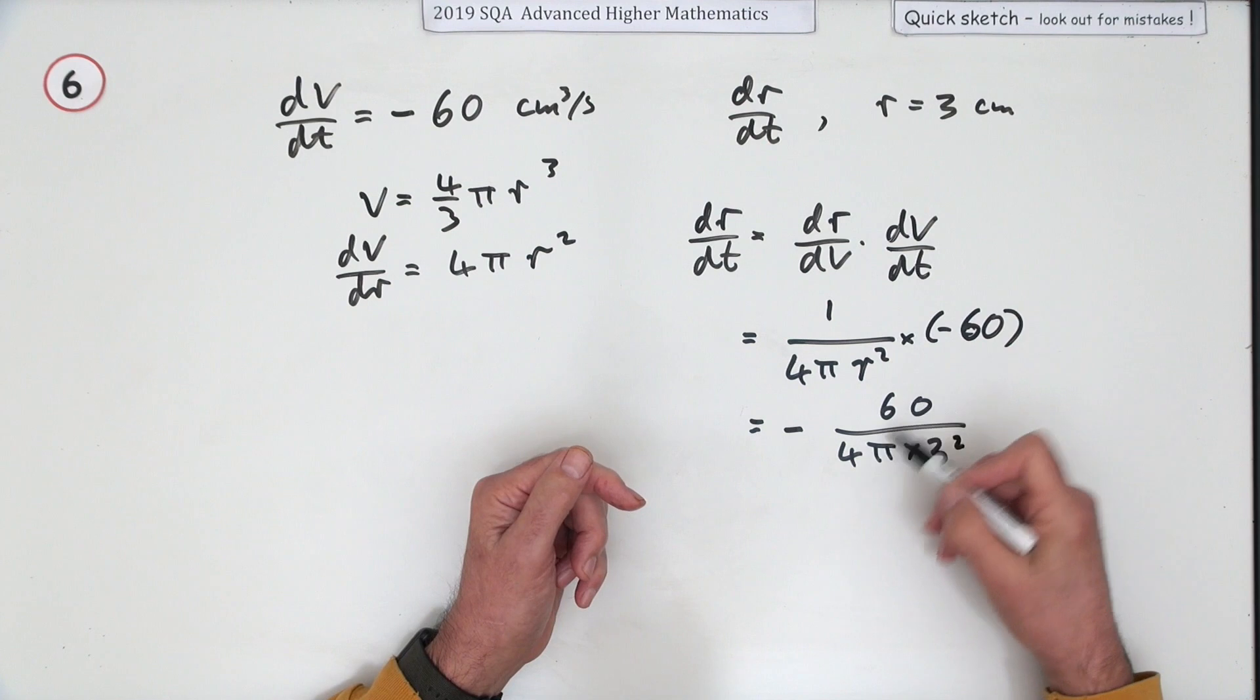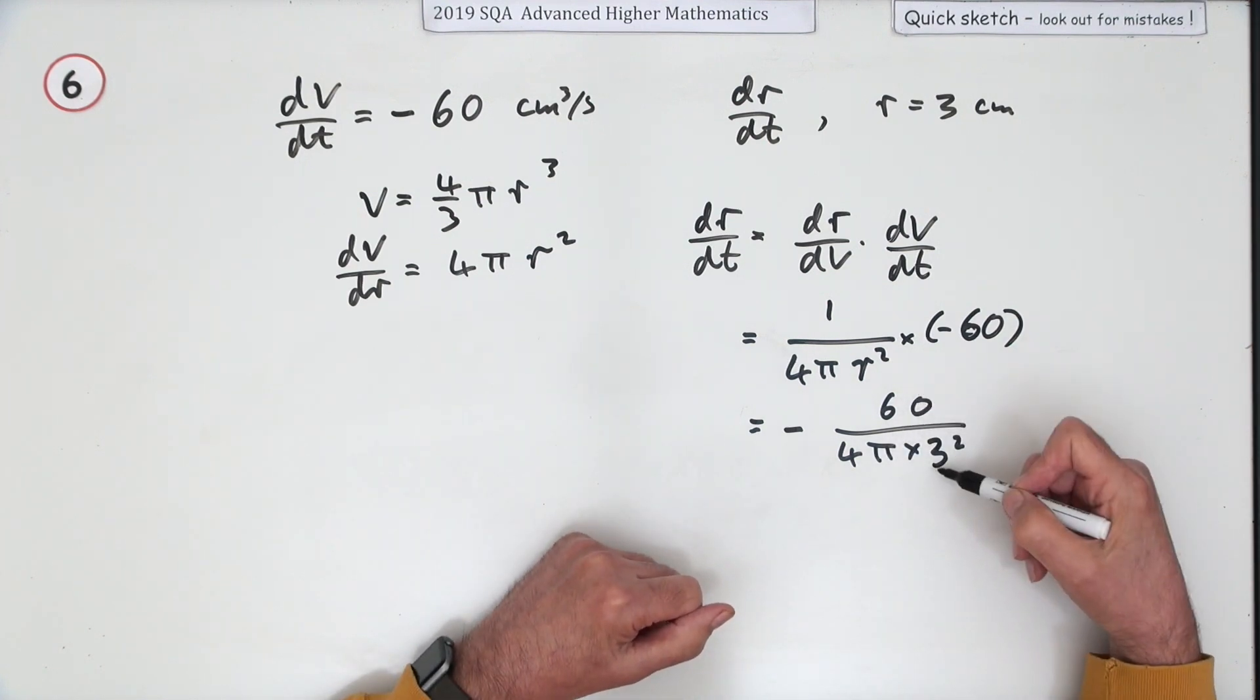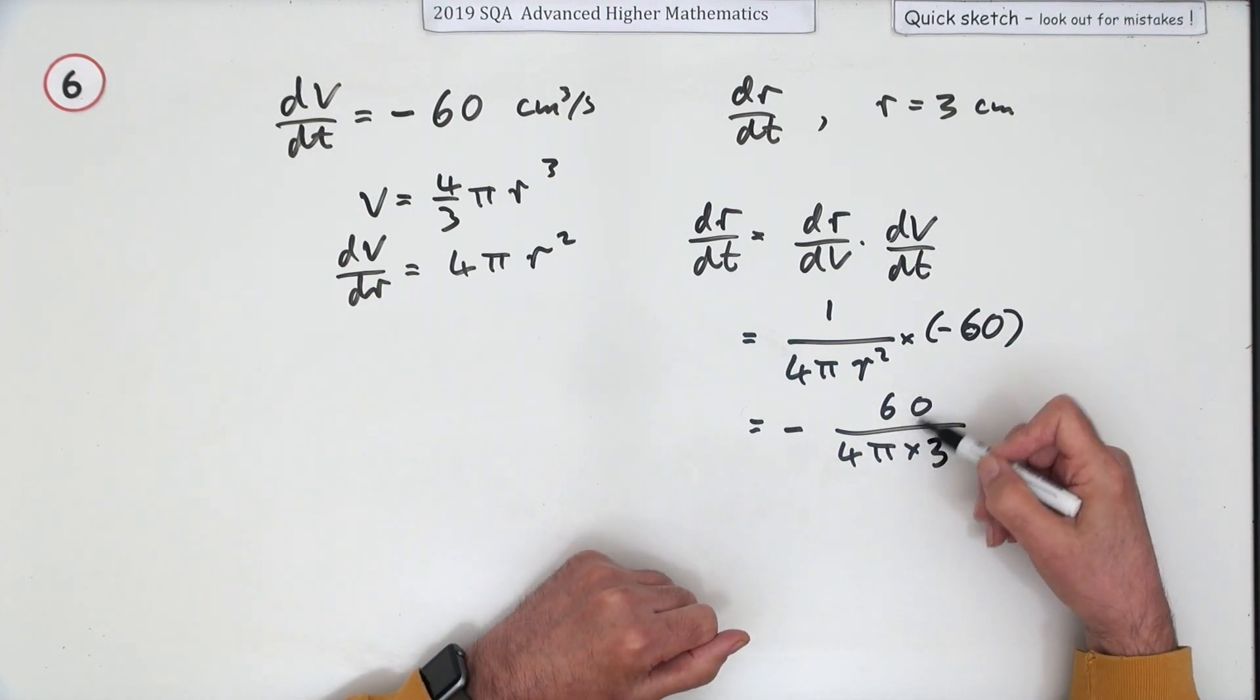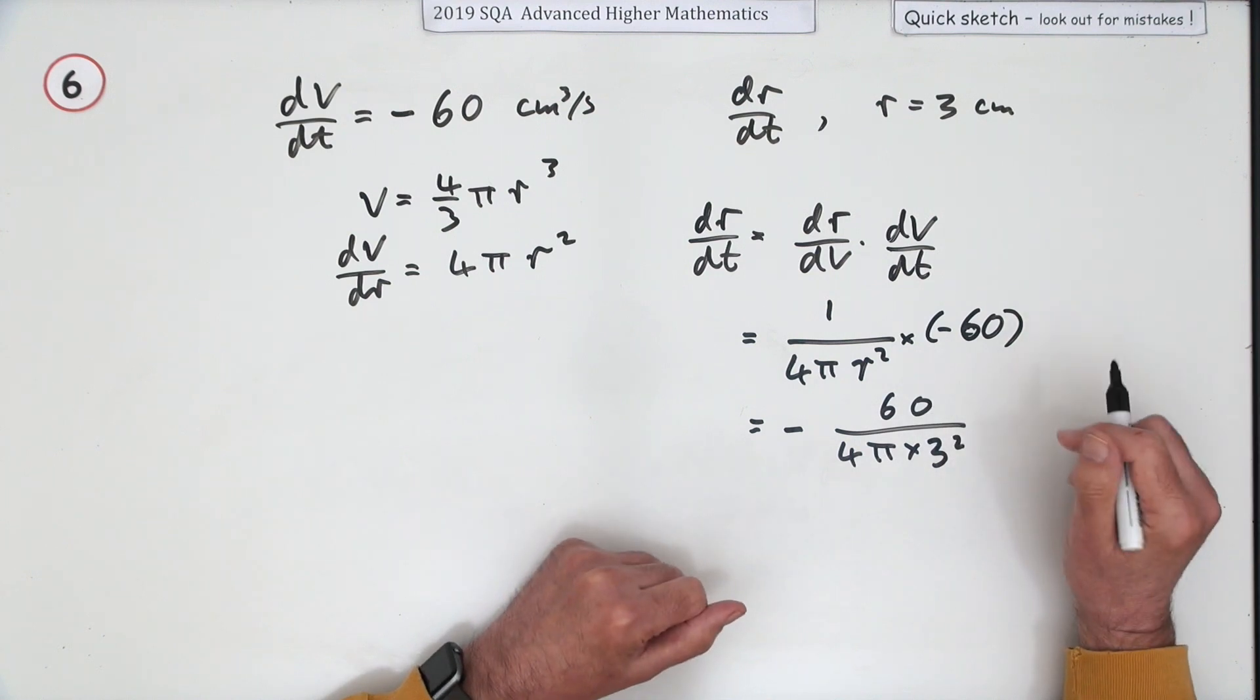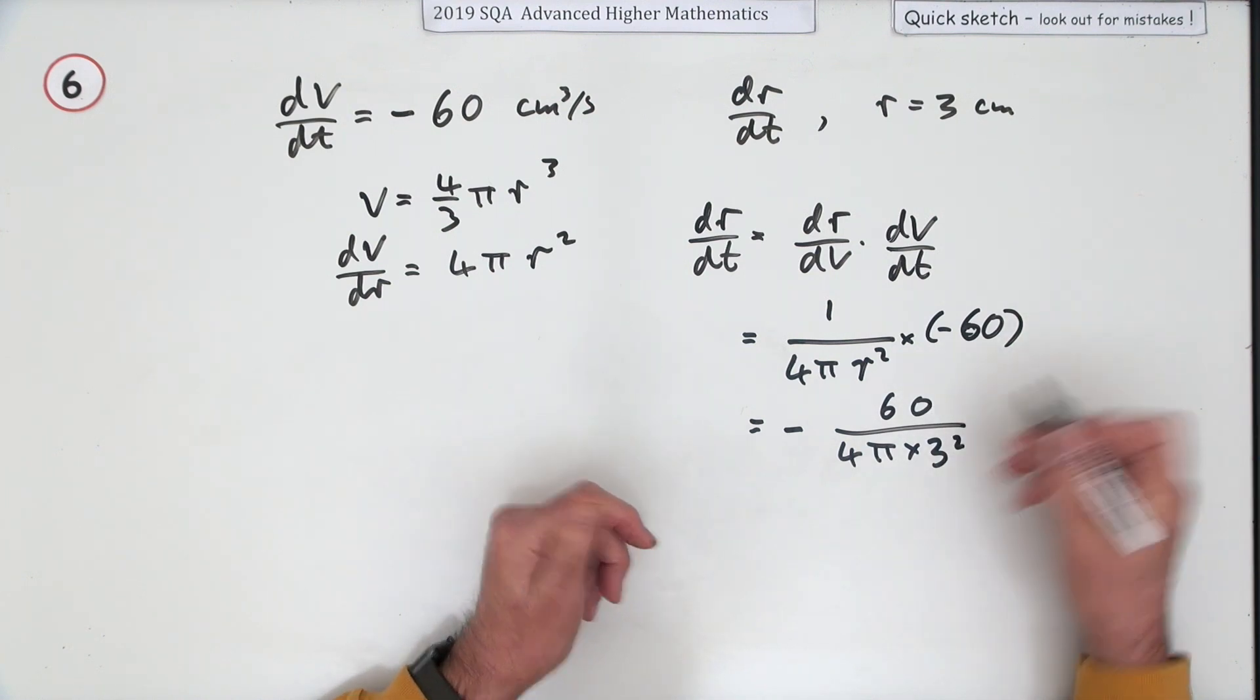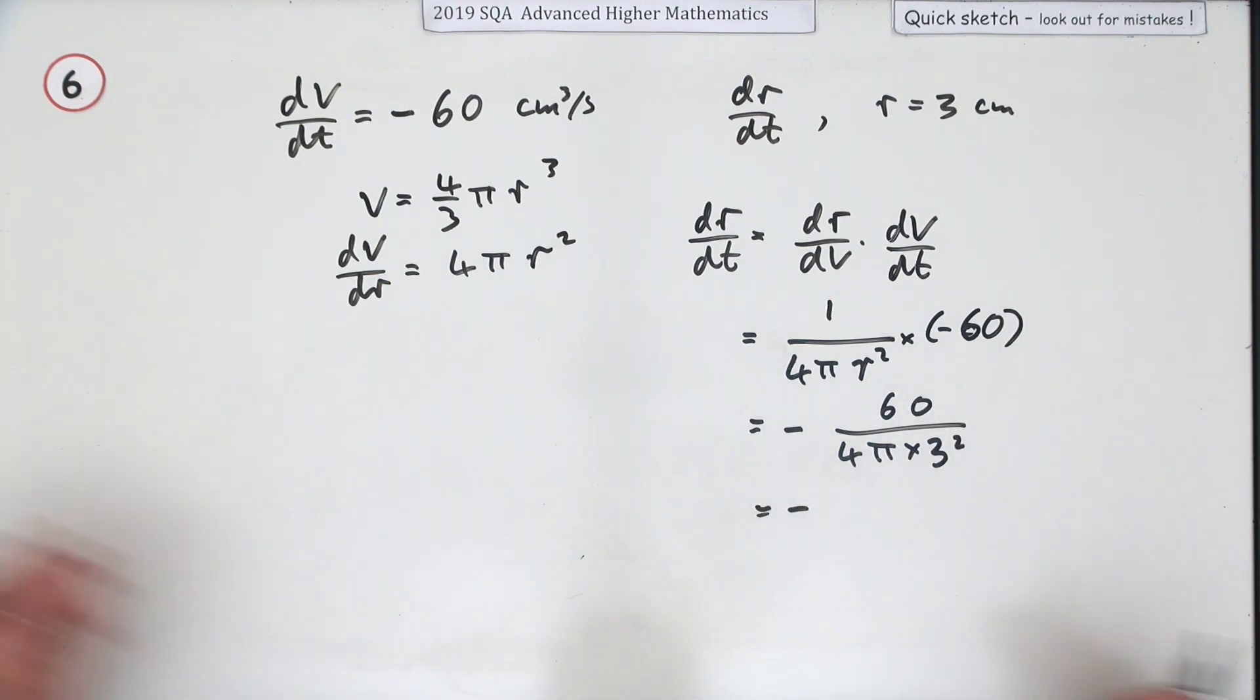I know these things can cancel down: 4 goes into that 15 times, and then the 15 will knock out one of the 3s and leave you a 5, but 5 over 3π. But it's probably just as well just popping that into your calculator.